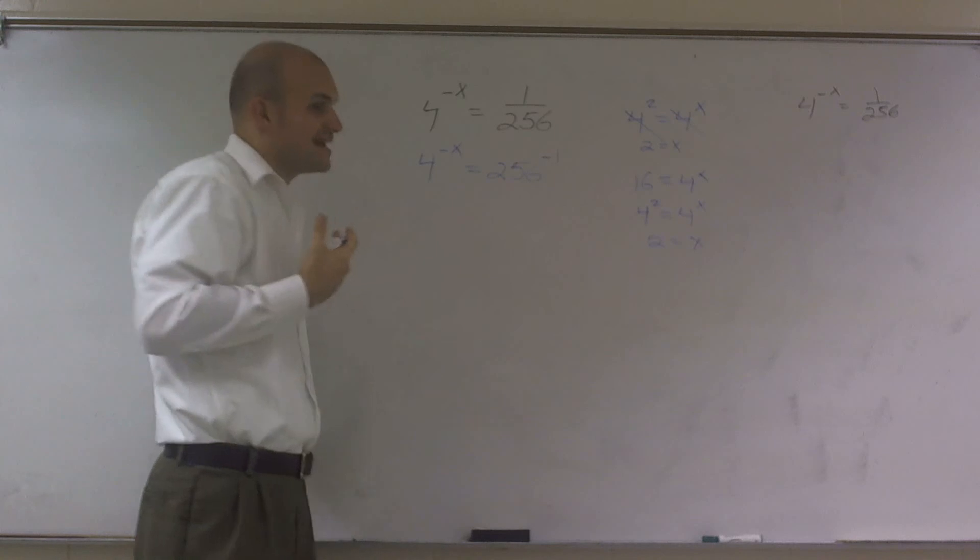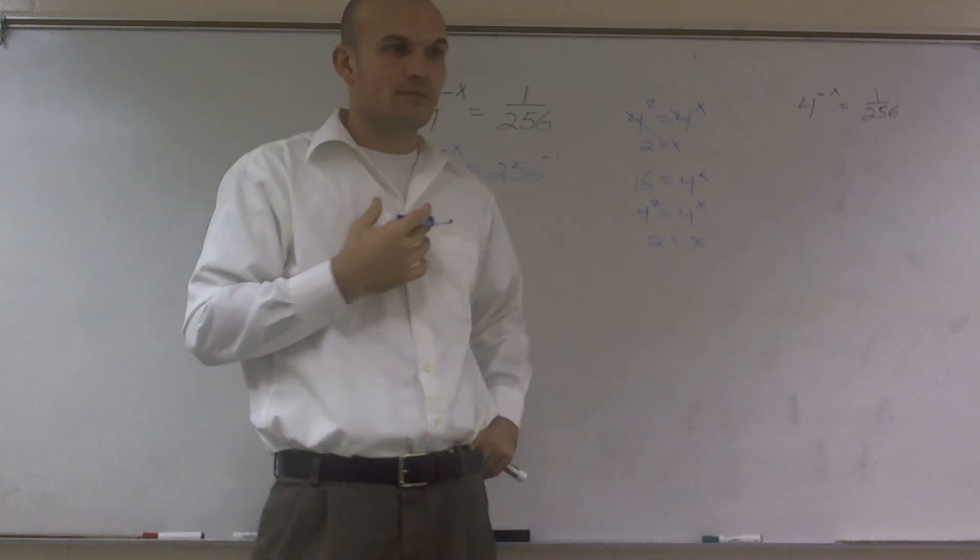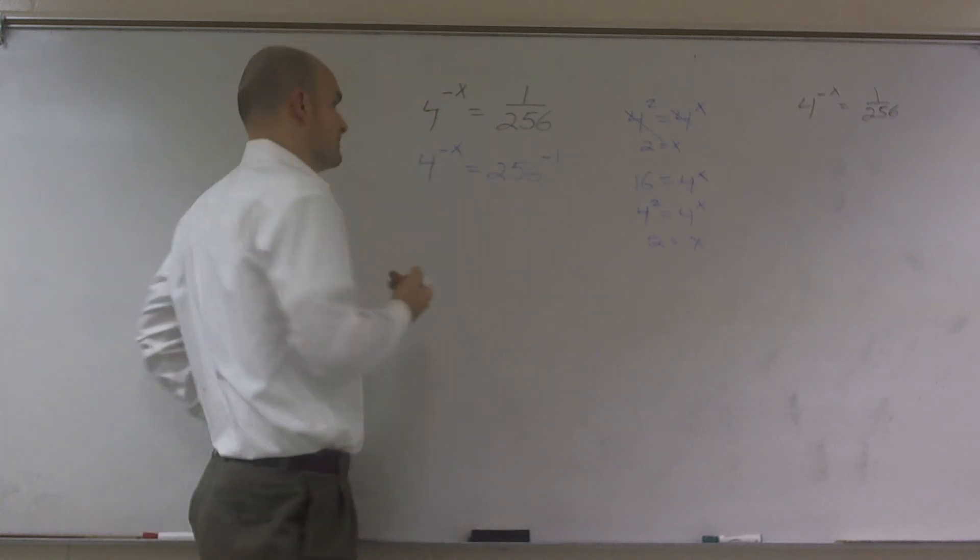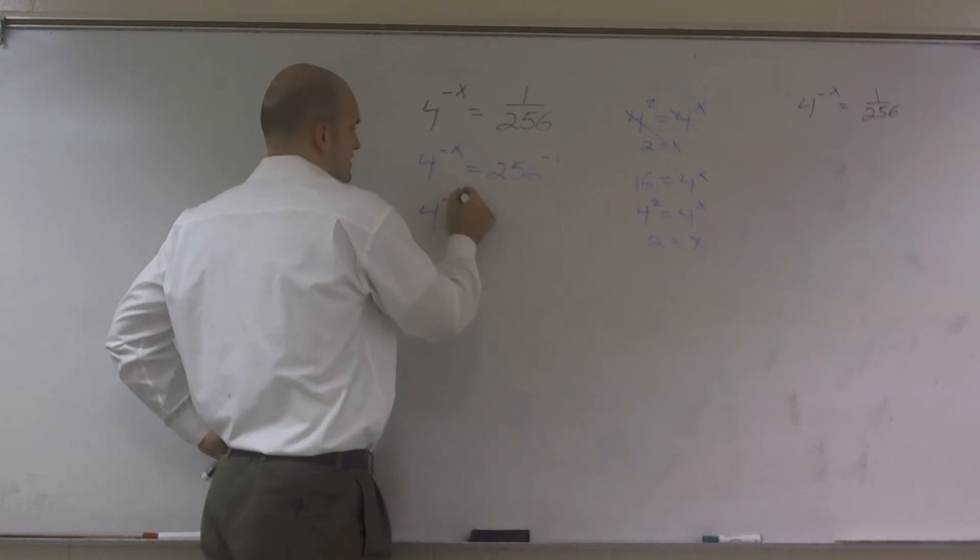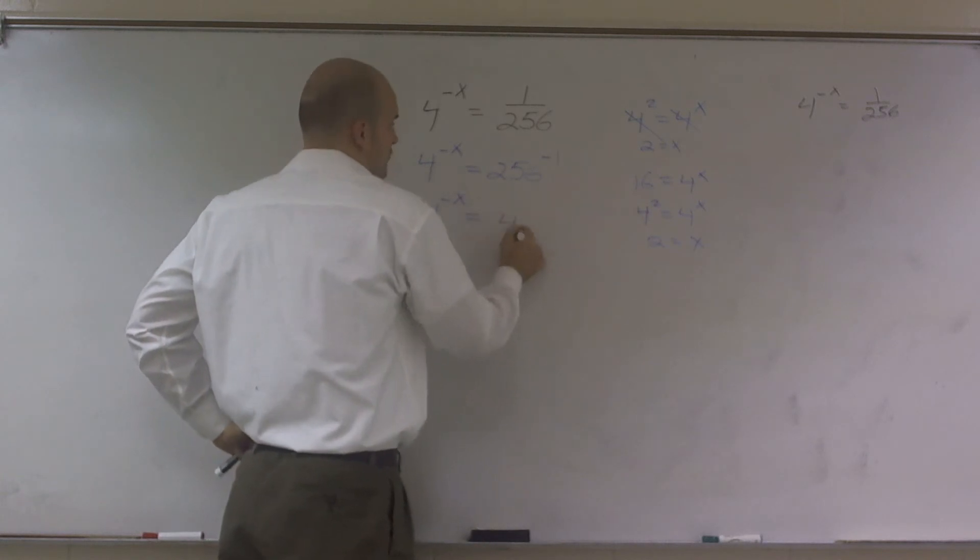Then I noticed that, yes, actually, 4 to the fourth power is 256. So I have 4 to the negative x equals 4 to the fourth power to the negative first.